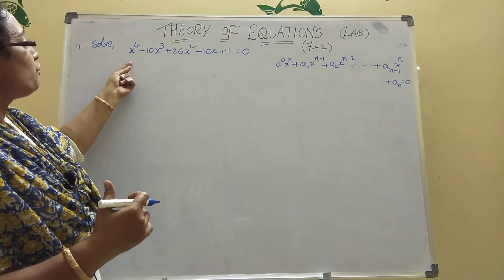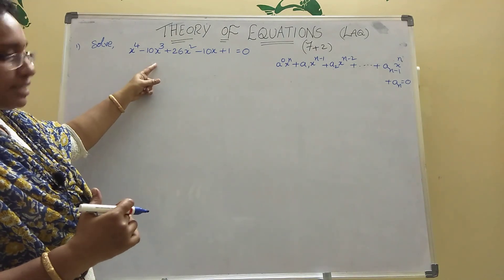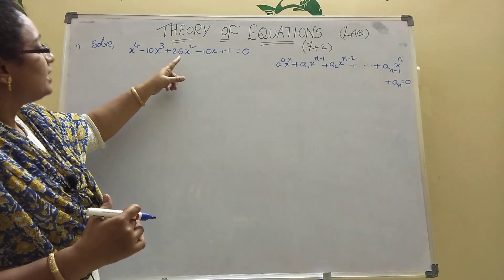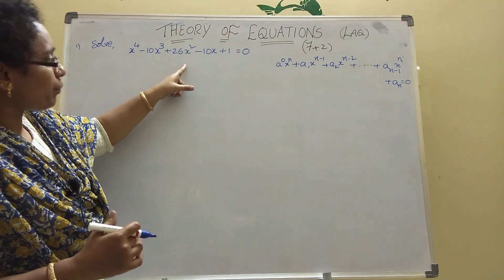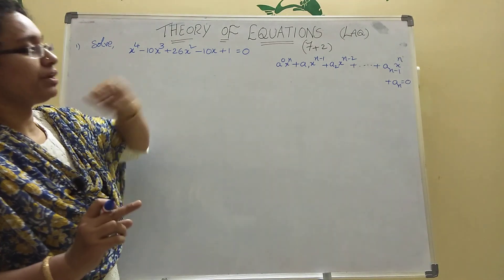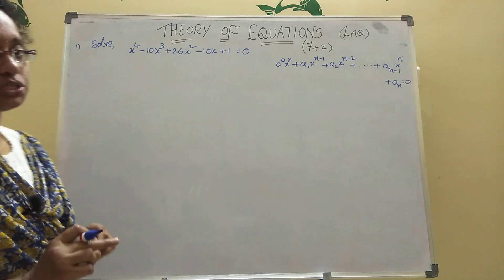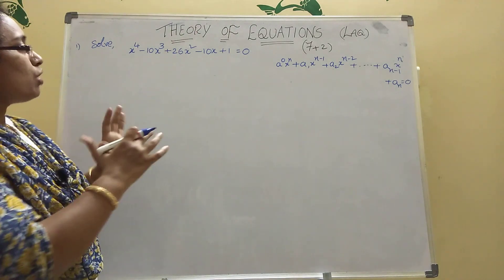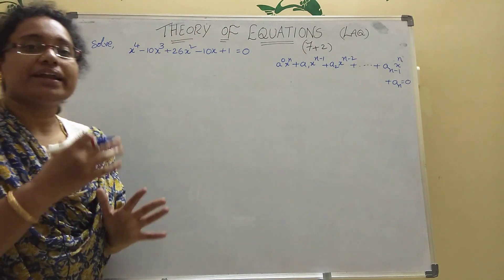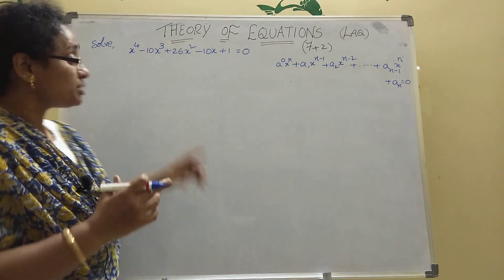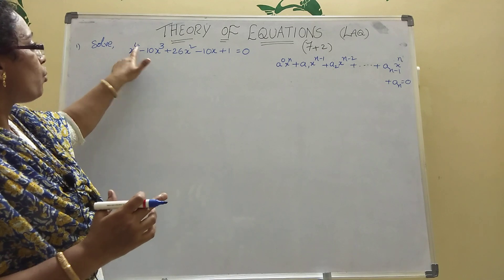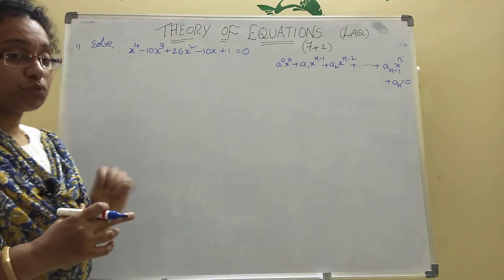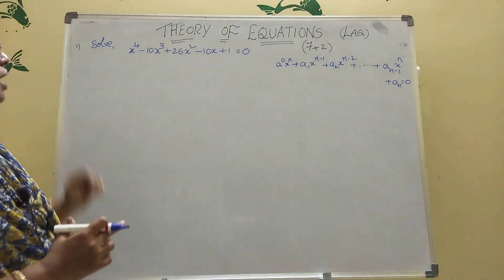Here, x power 4 minus 10x cube plus 26x square minus 10x plus 1 equal to 0 is given. You will solve — solve means you should find the x value. Here power 4 is there, so 4 factors will come, 4 values will come.